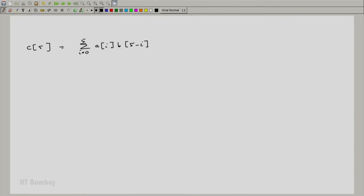In general, if you look at the coefficient of x raised to n, it looks like something like this. If you look at this expression carefully, you will realize that this is precisely the convolution of the two sequences a[n] and b[n].